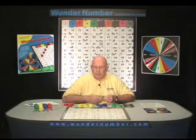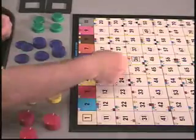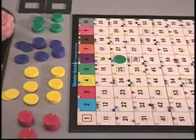Now on the Wonder Number Board, we're going to do two-digit addition. The first two numbers we're going to add are 26 plus 43. We have 26 listed with a green chip. Now we're going to add 43 to the 26.